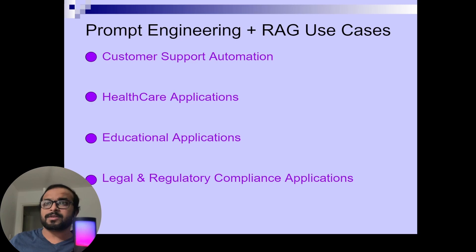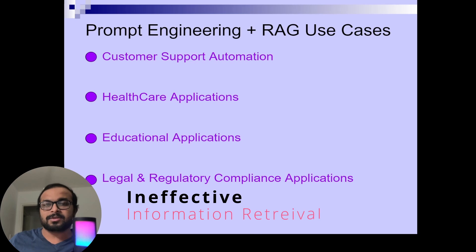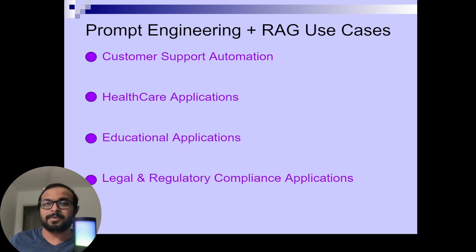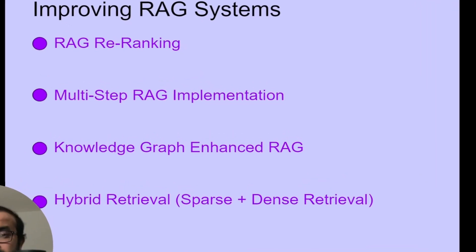One of the problems you might face when creating such an application is if your knowledge base is huge — with millions of vectors — a generic or complex user query can make the vector search more complex, and it may fetch wrong information from the vector database. If you have a large set of documents based on similar sentences, word formations, or similar semantic meanings, there will be issues fetching the correct records, which would sometimes not be appropriate to the user query. This is where we need to improve our RAG system with advanced RAG techniques.